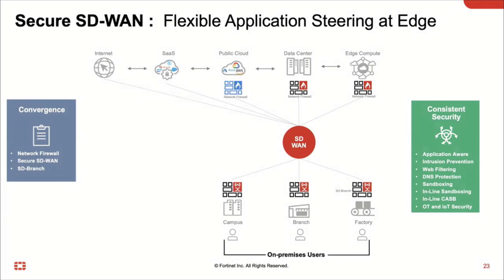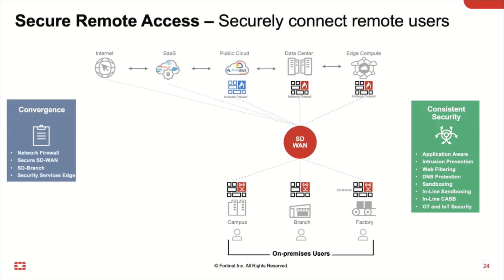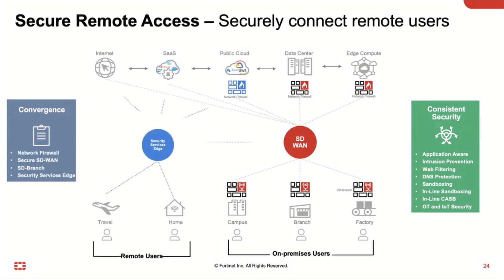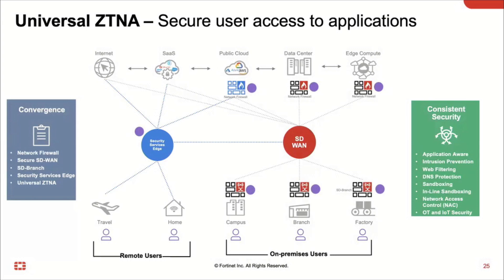Here's the programmatic journey for securing all types of users. Users working in the office accessing applications anywhere get secure SD-WAN for the best experience. As we bring remote users on board, we connect them to Security Service Edge for cloud-delivered security to access any applications. For secure access to private applications, we connect them to SD-WAN with secure private access. And to provide a consistent experience as users move between remote and on-premises, we enable universal ZTNA.